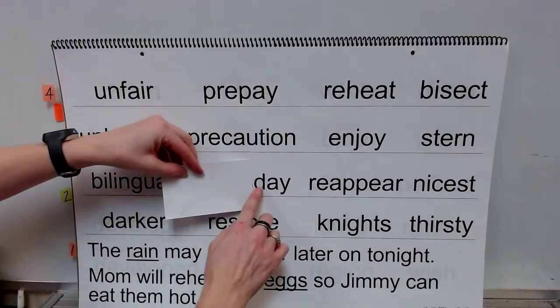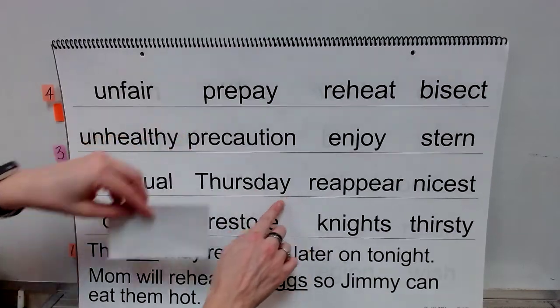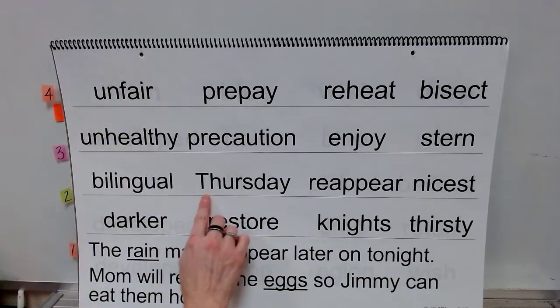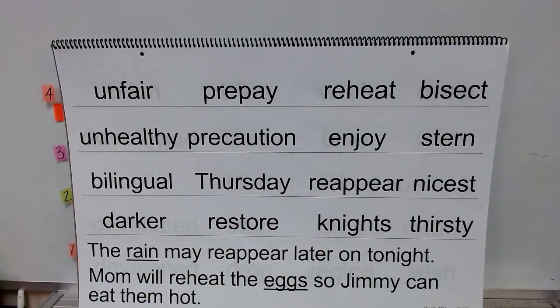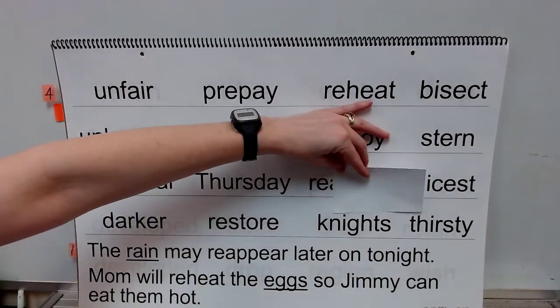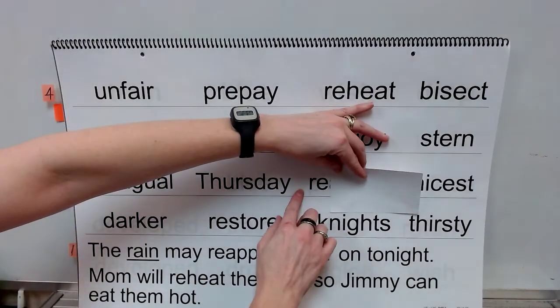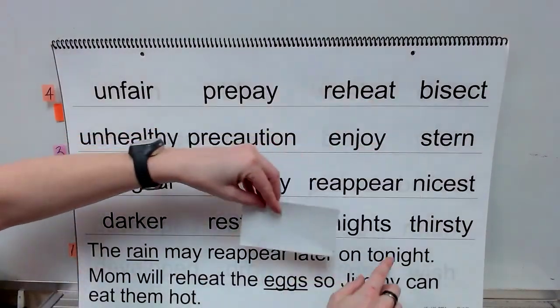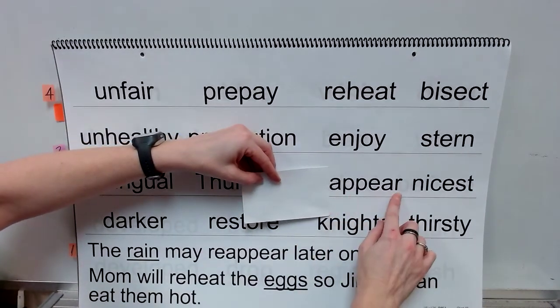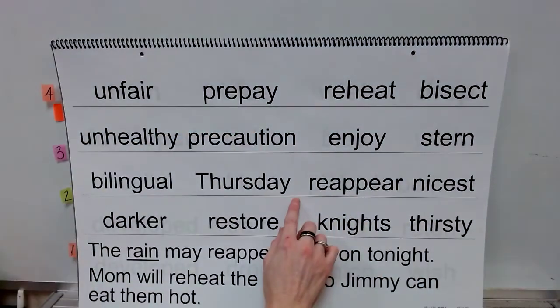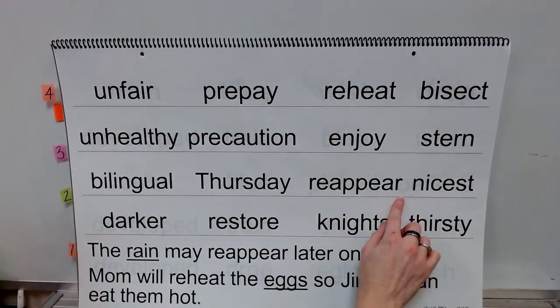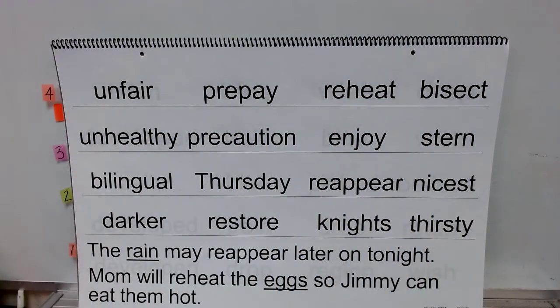Syllable: Thurs. Syllable: day. Word: Thursday. Prefix: re. Base word: appear. Word: reappear.